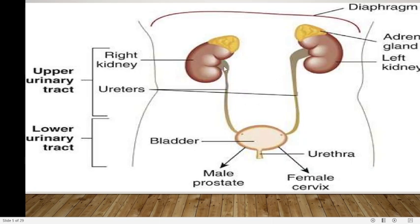The urinary system is divided into two portions. We have the upper urinary tract and the lower urinary tract. Looking at the diagram, we can appreciate the ureters and the two kidneys — you can still see the adrenal gland — which form part of the upper urinary tract. This is compared to the lower urinary tract that consists of parts of the ureters, the urinary bladder and the urethra.